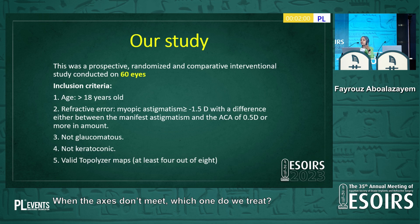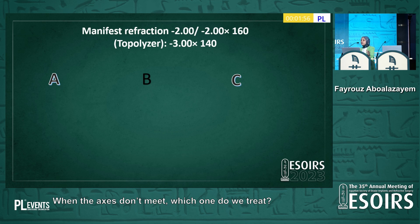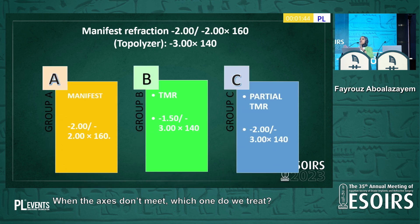In our study, we included 60 eyes. For a patient with manifest refraction of minus two and minus two at axis 160, and the topolizer finding astigmatism of three diopters at axis 140, we had three groups. The first group: treat the manifest refraction as it is. The second group: adopt the TMR technique — modify the sphere and use the topolizer astigmatism amount and axis. The third group, called the partial TMR group: take the manifest sphere as is and use the astigmatism amount and axis from the topolizer. Patients were all astigmatic above 1.5 diopters with a difference between topolizer reading and manifest astigmatism of more than 0.5 diopters.